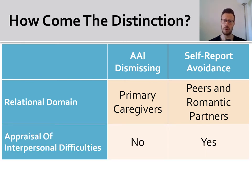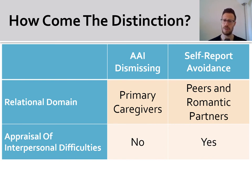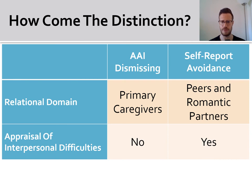Another important point of difference between the two assessments of attachment is that of appraising interpersonal difficulties. Those who are classified as insecure dismissing in the AAI tend not to appraise interpersonal difficulties — in fact, they tend to report past experiences as quite positive. In the self-report assessments, those who score higher on the avoidance dimension, by definition, tend to explicitly appraise interpersonal difficulties. This point of difference may be crucial because, assuming that for the most part we assess internalizing symptoms via self-report, self-reported avoidance and self-reported internalizing symptoms may very well correlate by the very fact that individuals who tend to appraise difficulties may score higher on both of these assessments.